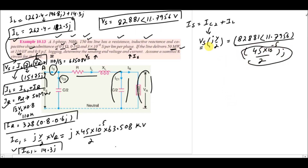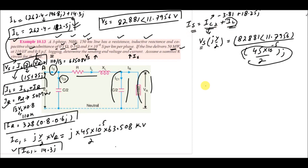The value of IC2 comes out to be −3.81 + j18.25 A. We already know IL = 262.4 − j182.5 A. Adding IC2 and IL gives the sending end current IS. This completes the example related to the nominal pi model of the medium transmission line.